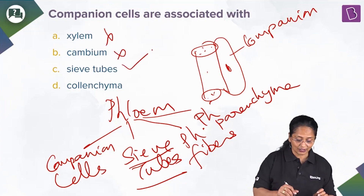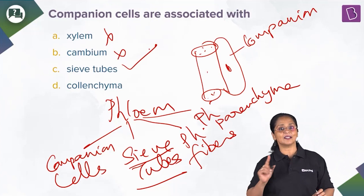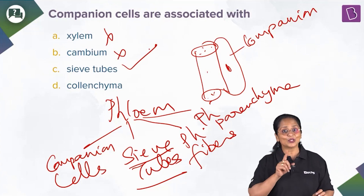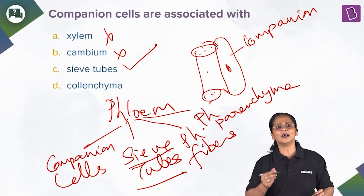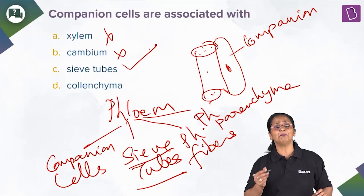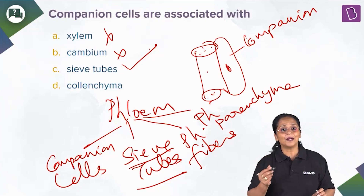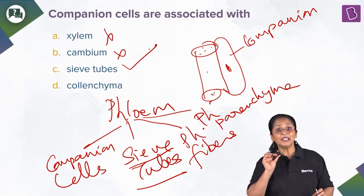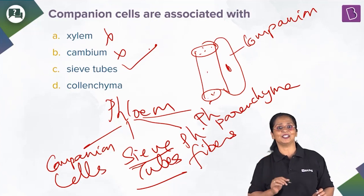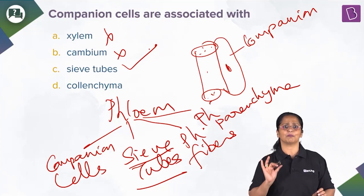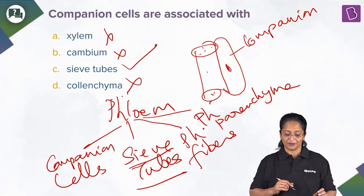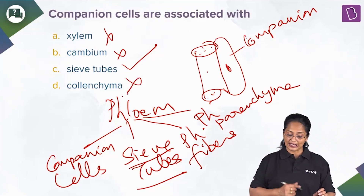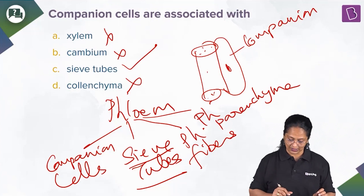Sieve tube — yes, sieve tube is the right answer. Companion cells are associated with the sieve tube. Collenchyma is a simple, permanent, living mechanical tissue that provides mechanical support — so this is wrong. The right answer is companion cells are associated with sieve tubes.